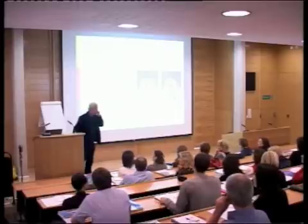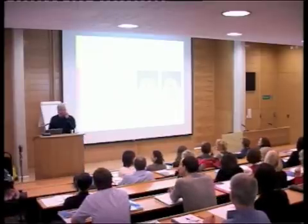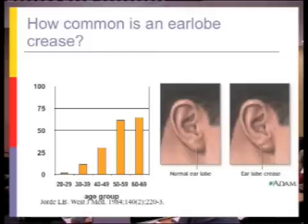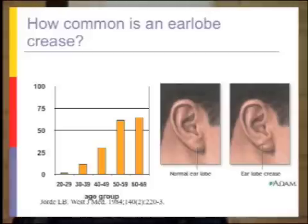For example, we might ask: how common is an earlobe crease? It shows you a picture here — normal earlobe versus earlobe crease. They increase with age and have been said to be a risk factor for cardiovascular disease, but the confounder here is age. They just become more common with age, and of course cardiovascular disease does as well. So sorting out earlobe crease as a risk factor, we need to know its prevalence by age as well.